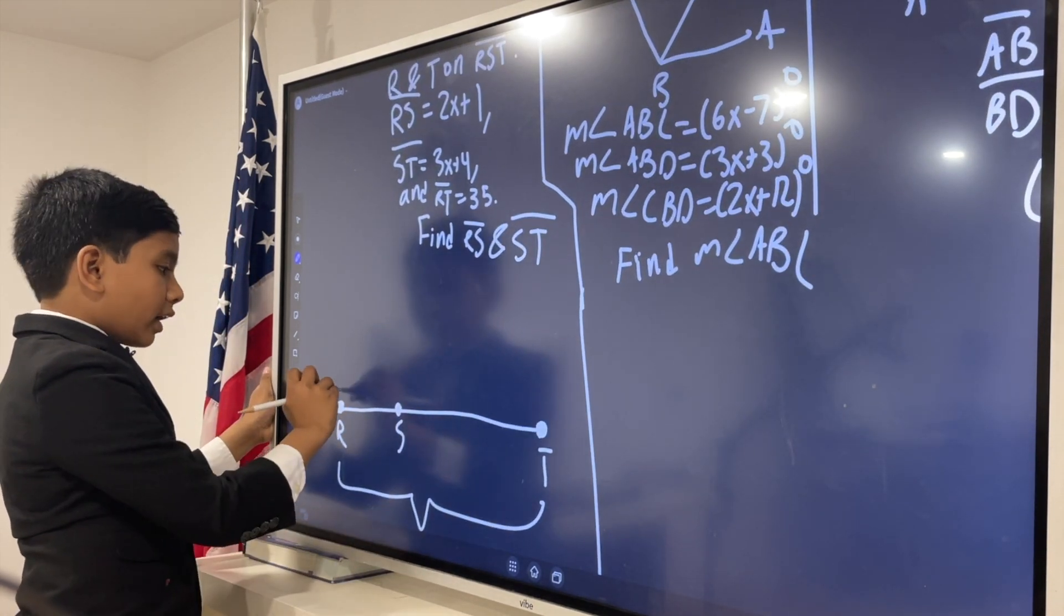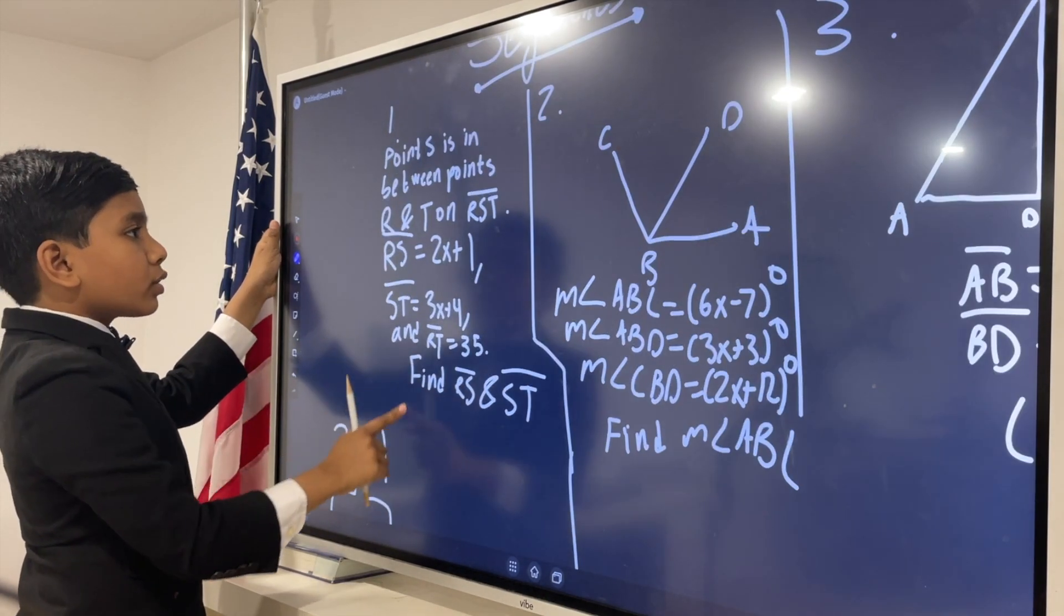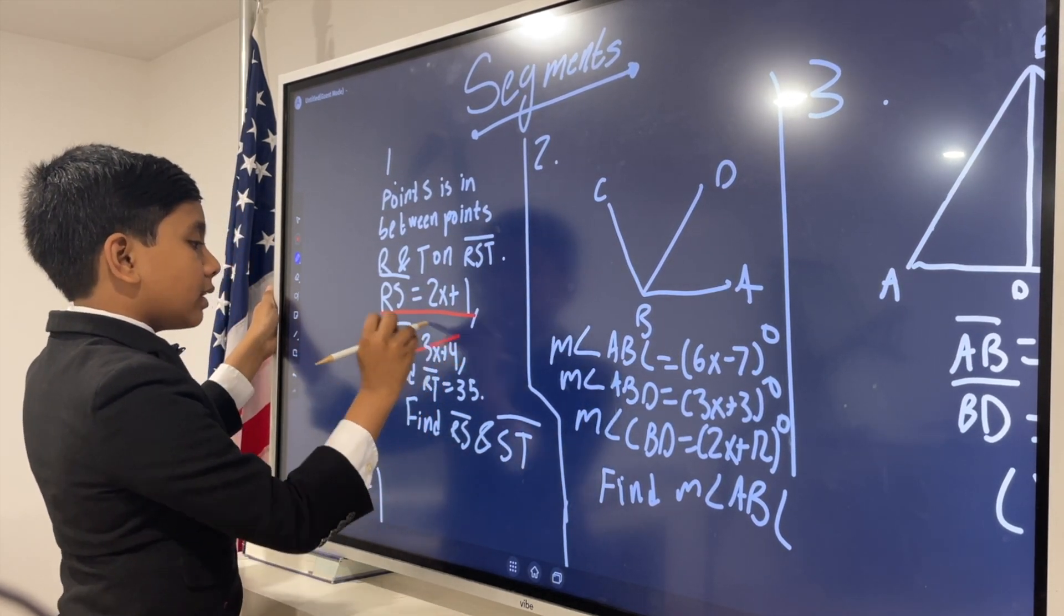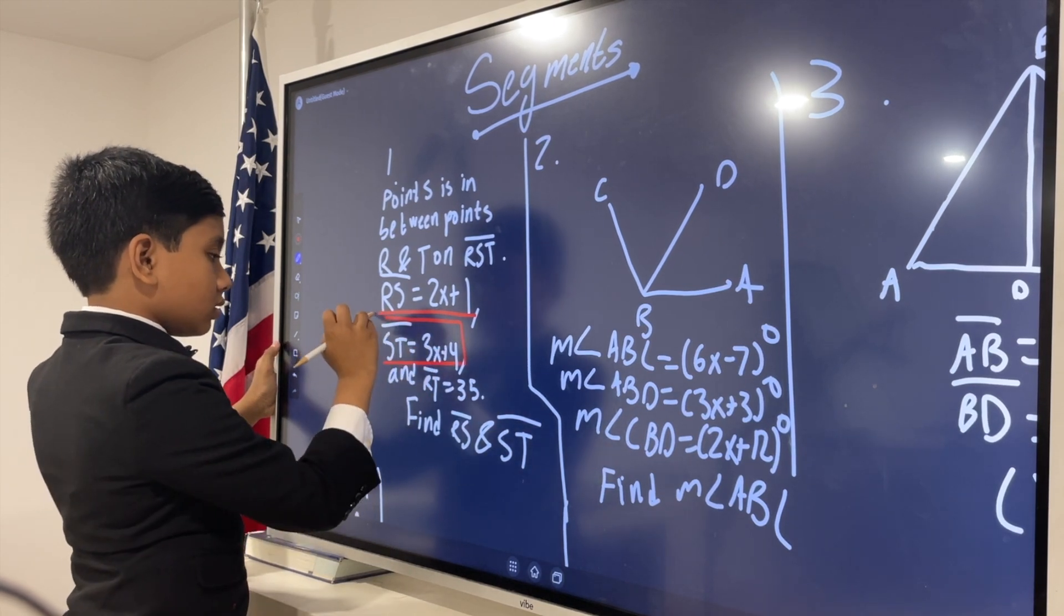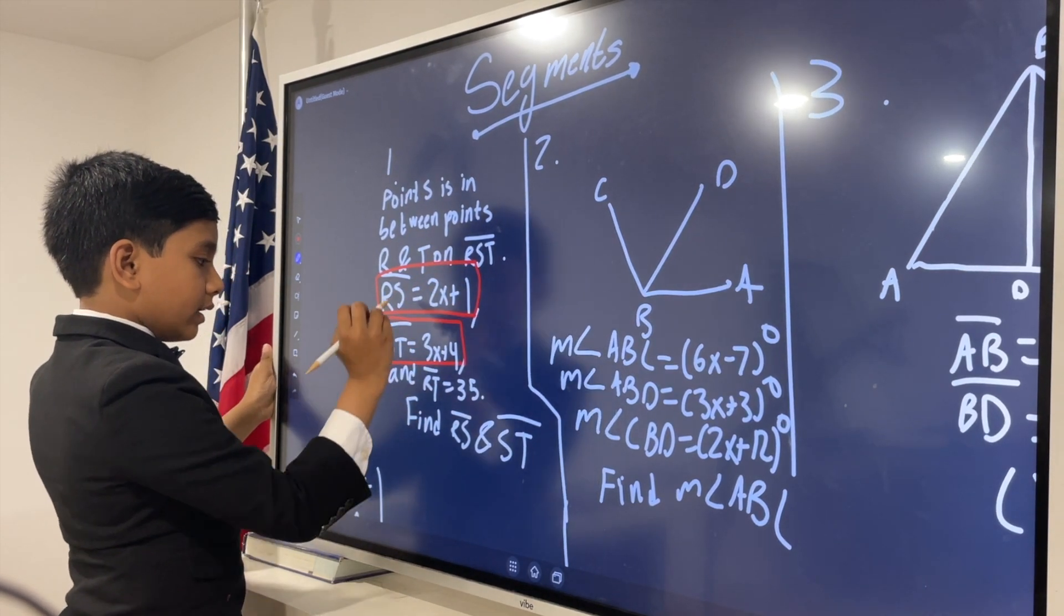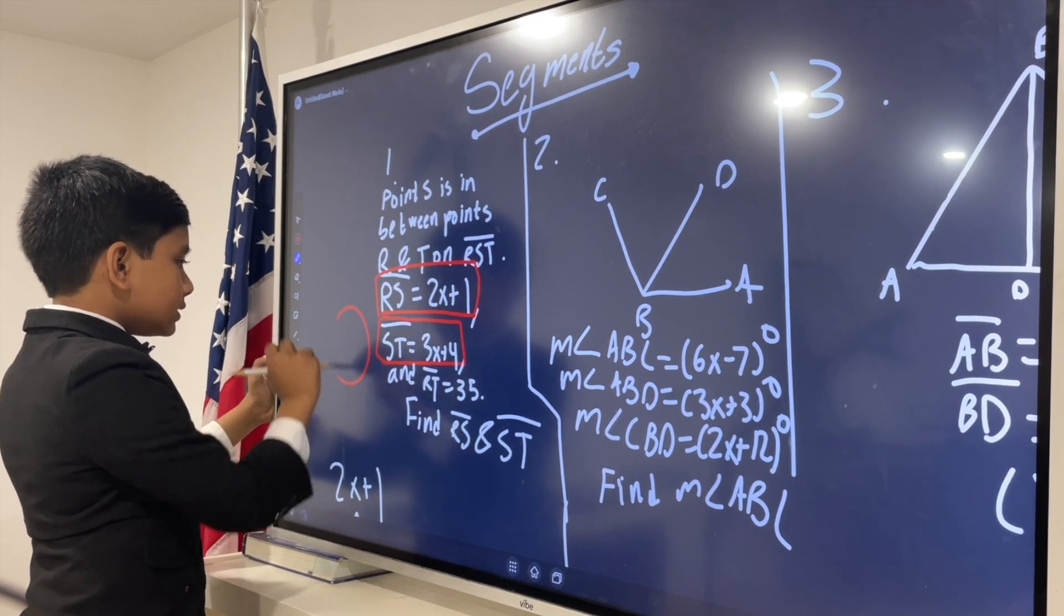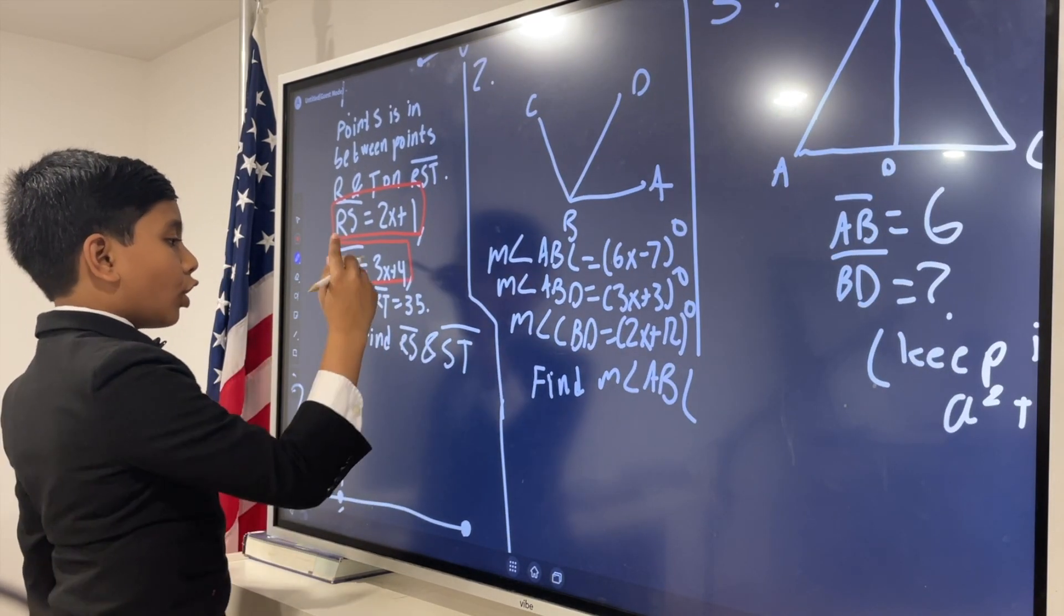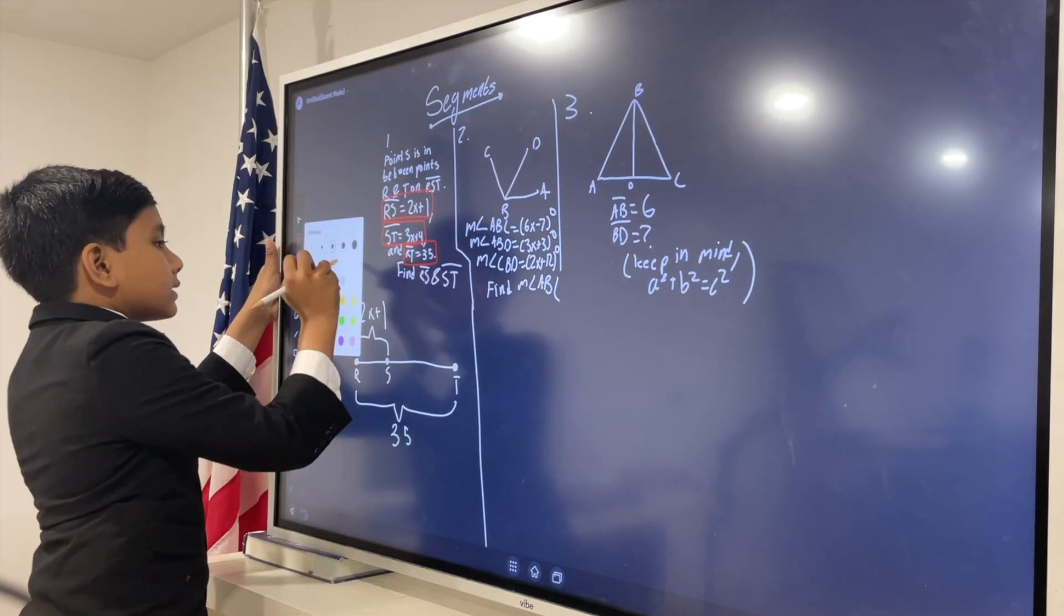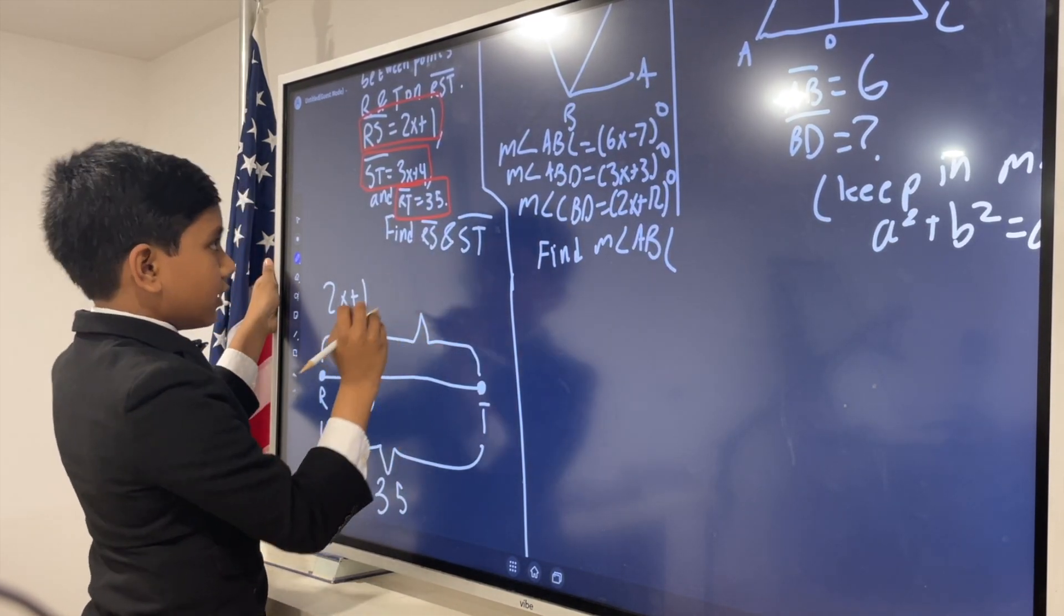We know that RS is 2x plus 1. So, let's highlight the important things. RS is 2x plus 1. Now, ST is 3x plus 4. Those are the three important things. ST is 3x plus 4. We've already wrote down that RT is 35.